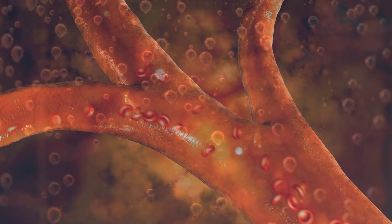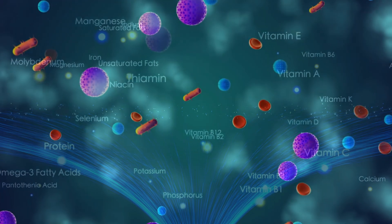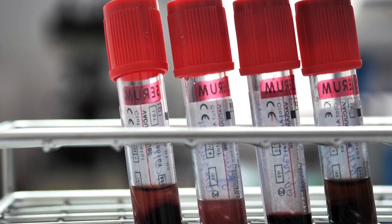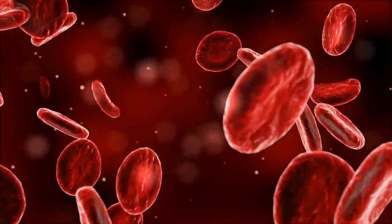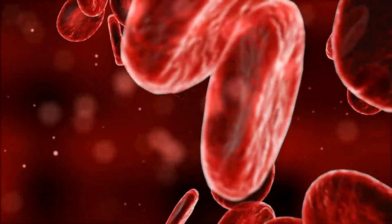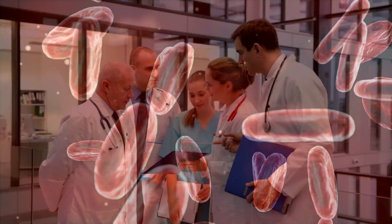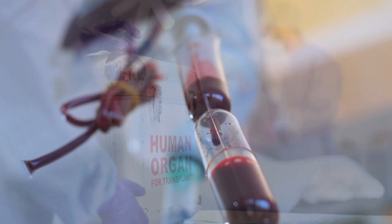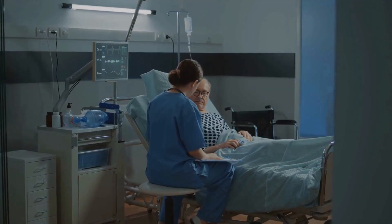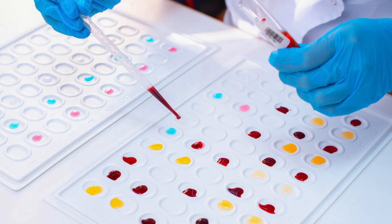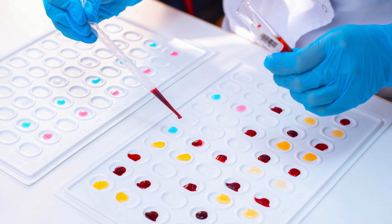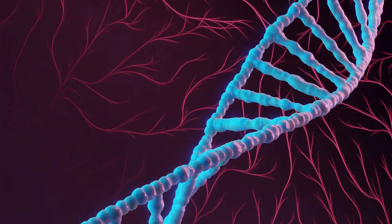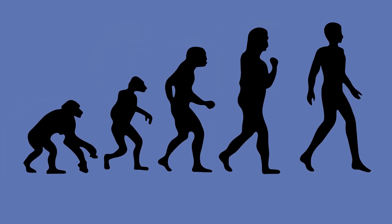Blood is essential to life, carrying oxygen, nutrients, and immune cells throughout the body. But not all blood is the same. Blood types, determined by specific molecules on the surface of red blood cells, play a crucial role in medicine, especially in transfusions, organ transplants, and even some diseases. Understanding your blood type is more than just a medical necessity — it can reveal fascinating insights about genetics, immunity, and even evolution.